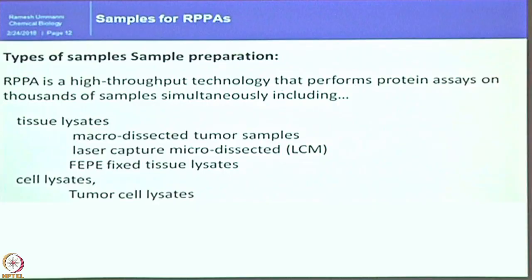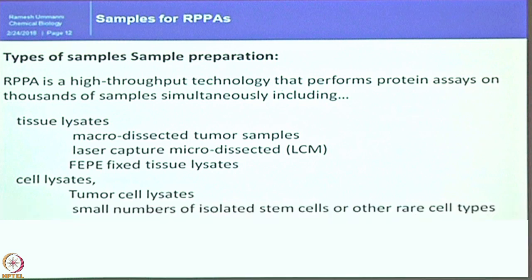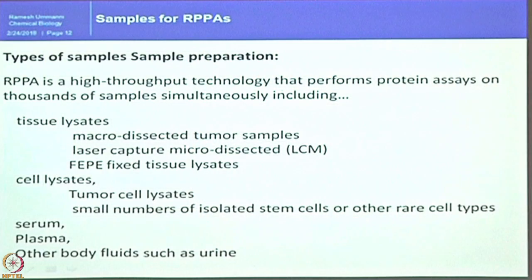Sometimes those samples cannot be analyzed by western blotting due to a smearing effect, which can be avoided here. Cell lysates, particularly tumor cell lysates, can be prepared from cell lines in the lab. Small numbers of isolated stem cells and other rare cell types can also be used. Stem cell biology always deals with thousands of cells, not even millions, whereas cancer research uses millions. Serum, plasma, or any body fluid such as cerebrospinal fluid or urine can be directly printed on the array by following specific methods.